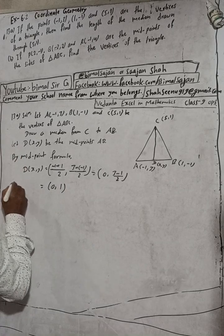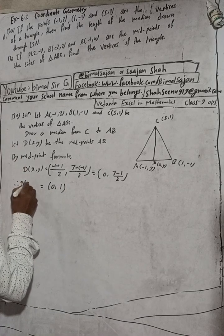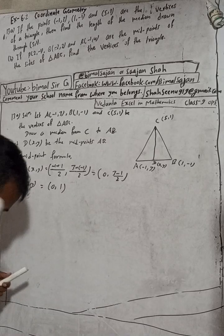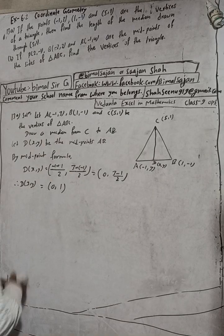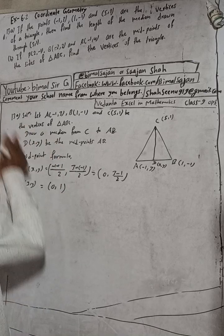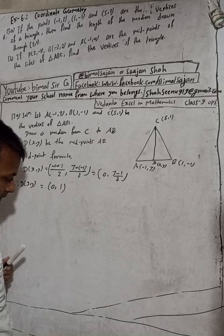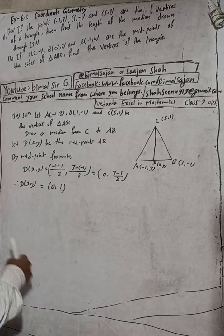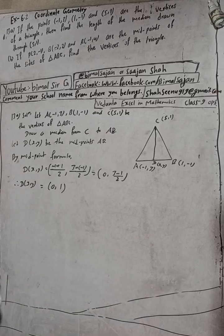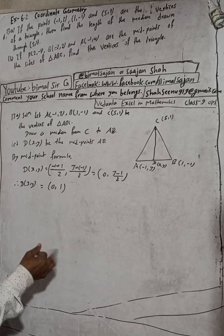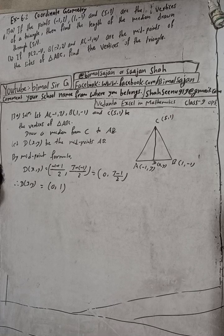Therefore, D(x, y) = (0, 1) is the midpoint.